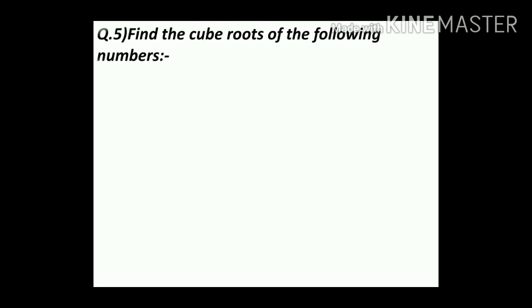Question number 5: Find the cube roots of the following numbers. First: 343. Here 343 is not divisible by 2, 3, or 5. Using the test of divisibility learned earlier, this number is divisible by 7. We will use the prime factor method to find the cube root.